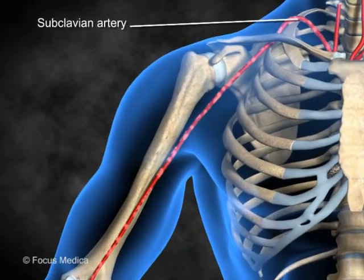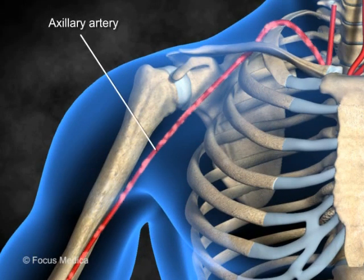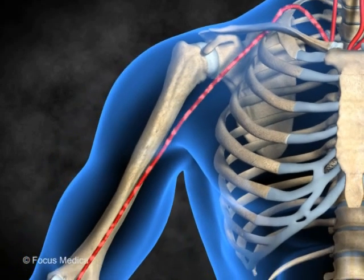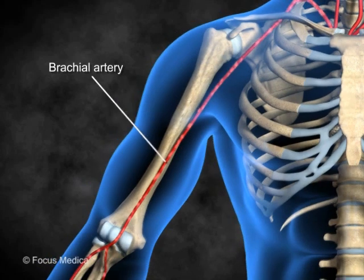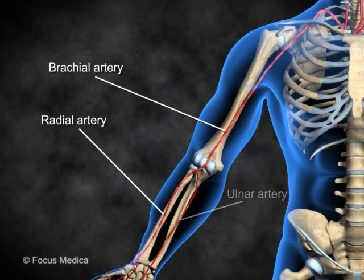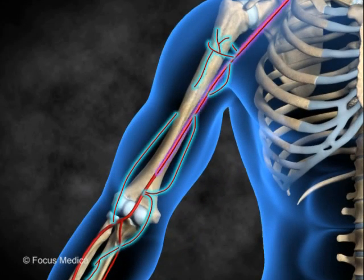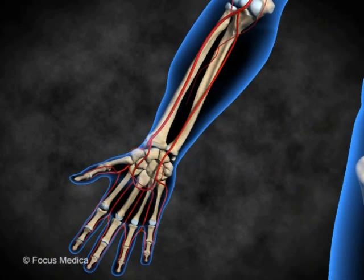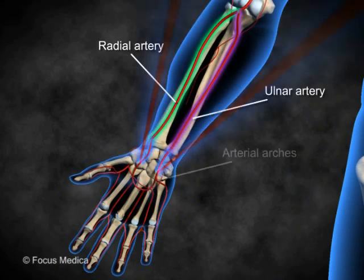The subclavian artery provides all the blood to the upper limb. As it passes to the upper limb, it is named the axillary artery, and its continuation into the upper limb is then called the brachial artery. The brachial artery runs through the arm and finally divides into the radial and ulnar branches as it reaches the forearm. Several named and unnamed branches arise from these principal arteries, and branches of the radial and ulnar arteries finally anastomose in the hand to form arterial arches.